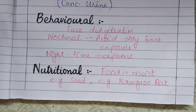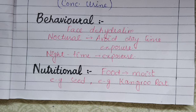Next is nutritional adaptation. This means that organisms gain food that contains moisture. For example, organisms that eat seeds — among them we have the kangaroo rat, which adopts nutritional adaptations by consuming food that contains moisture.